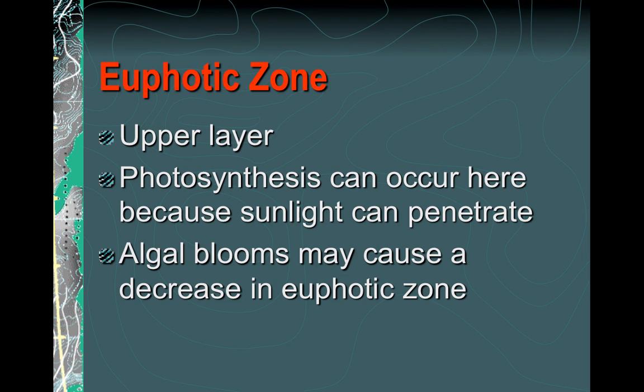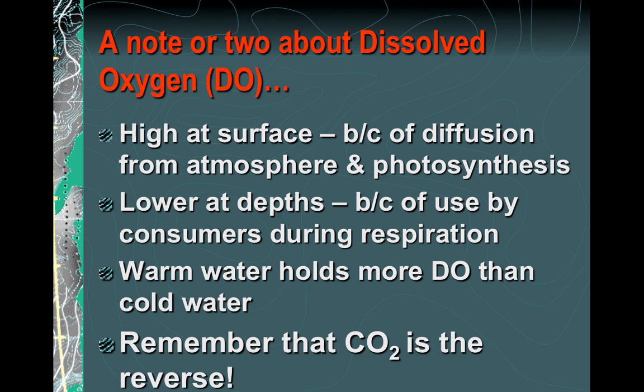The euphotic zone is the upper layer where a lot of photosynthesis occurs, found predominantly in the intertidal zone area. In the ocean, dissolved oxygen is higher at the surface and decreases with depth. Warm water holds more dissolved oxygen than cold water. Carbon dioxide is the reverse — more CO2 is located near the bottom or middle of the ocean rather than the surface. It's like a carbon sink.